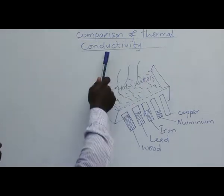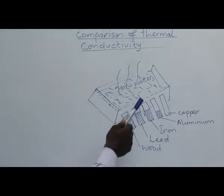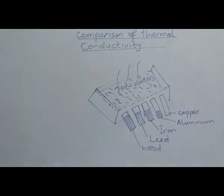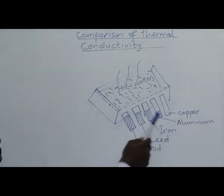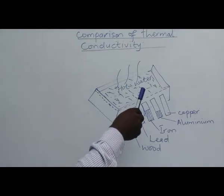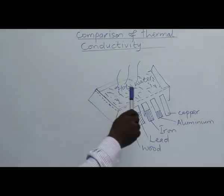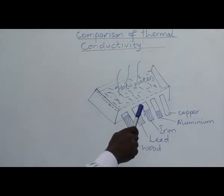Comparison of thermal conductivity. The effect of heat on materials differs from one another. In this experiment, equal lengths of rods made of copper, aluminum, iron, lead, and wood are coated with paraffin wax, as seen in the diagram. Boiling water is then poured into the metal container in which the rods are fixed, so that the ends of the rods are heated to the same temperature.